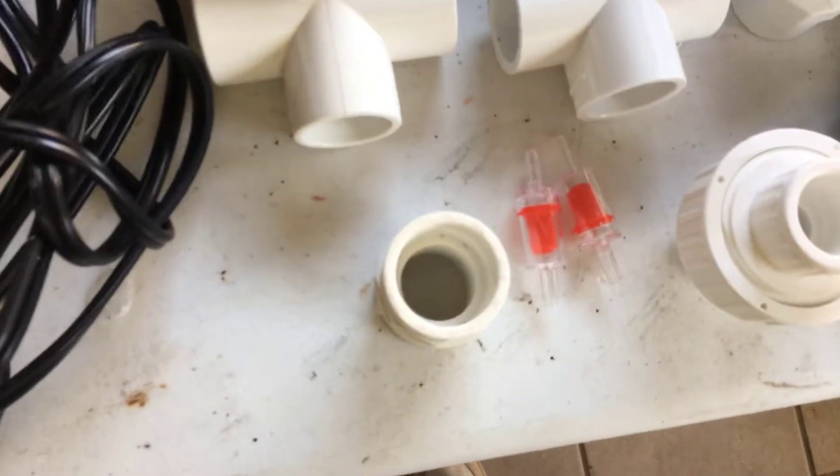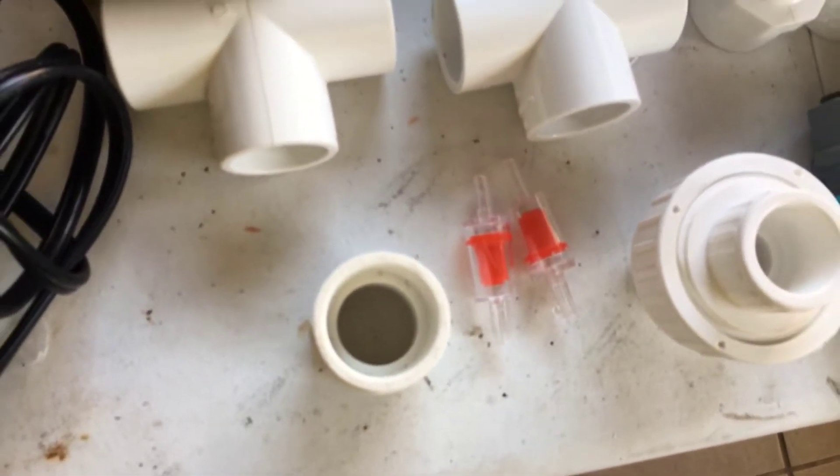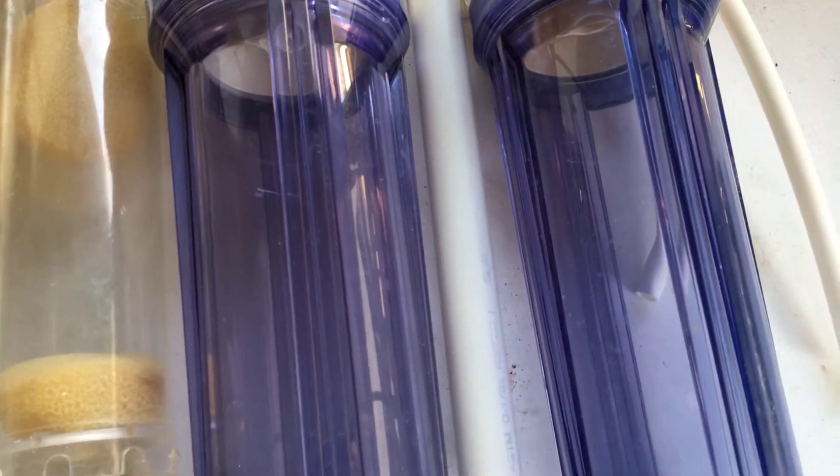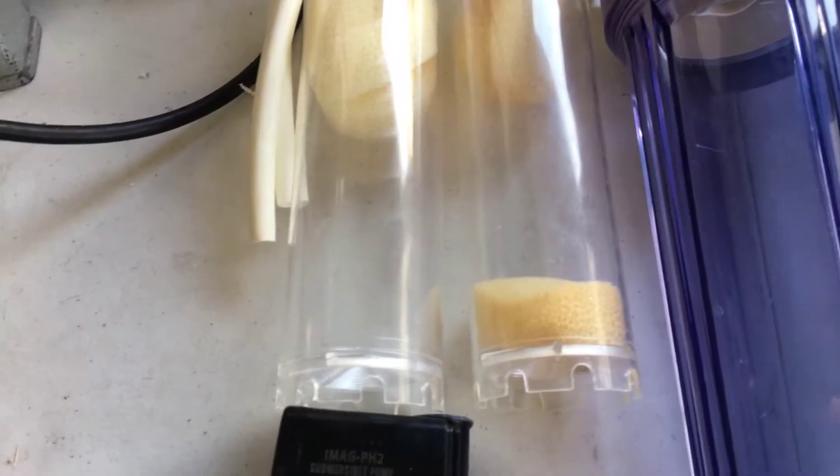Check valves, got those on Amazon. The canister filters, these came from Bulk Reef Supply, and the media chambers themselves.